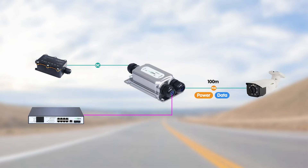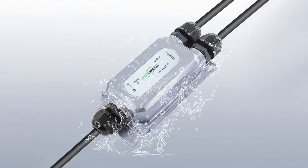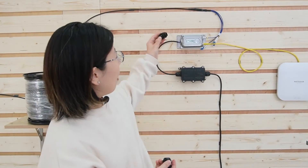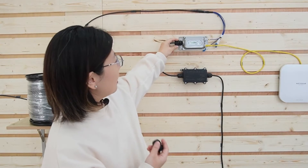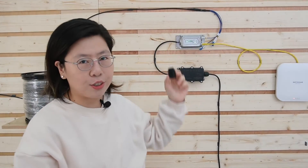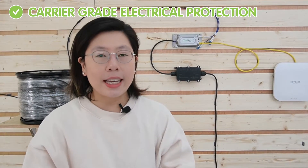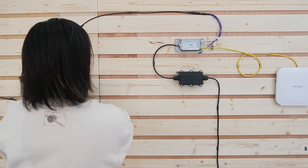It also provides PoE to IP devices for an extra 100 meters, delivering PoE+ 30 watts output power. It is also IP67 waterproof rated, and the working temperature range is from minus 20 degrees up to 60 degrees Celsius. It also has a waterproof wrench, gland, and neck — you can just screw it tightly, make sure you use a wrench. And they carry great electrical protection against lightning and other power surges, which is ideal for outdoor deployment.